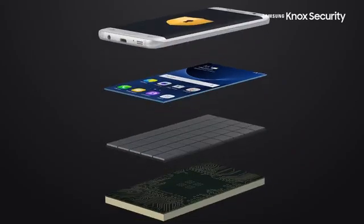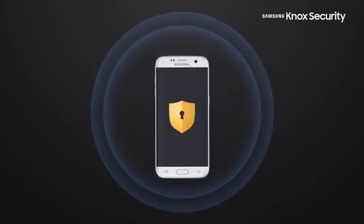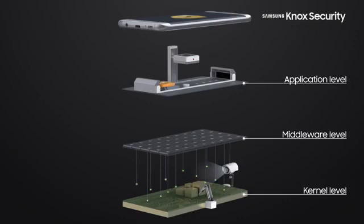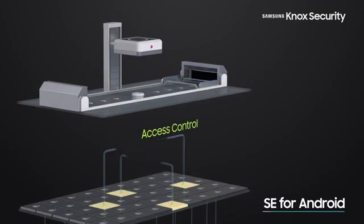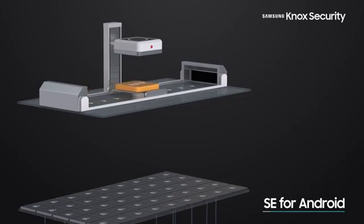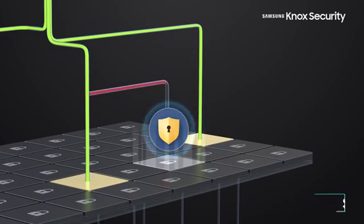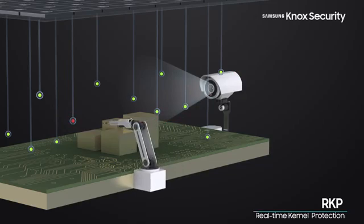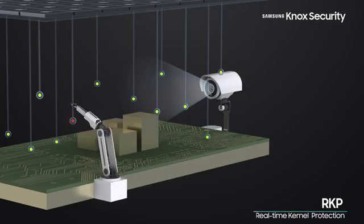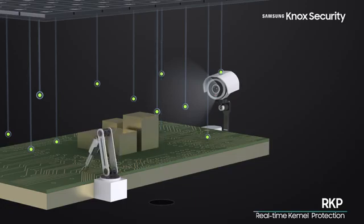The best way to prevent rooting is to protect your kernel at all costs, an area where Knox specializes. Samsung Knox grants apps with minimal permissions that apps need in order to function, preventing apps and malware from accessing sensitive data and resources. If malware tries to access the kernel by an unauthorized route, Knox monitors kernel memory in real-time and prevents modifications of, and restricts access to, the kernel code.